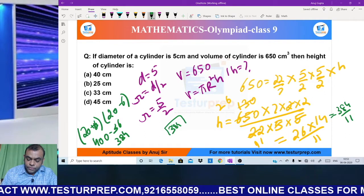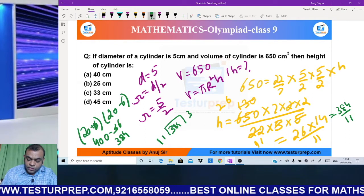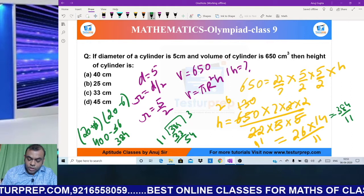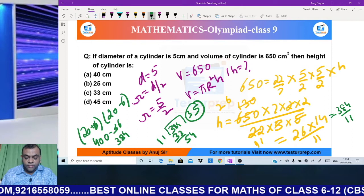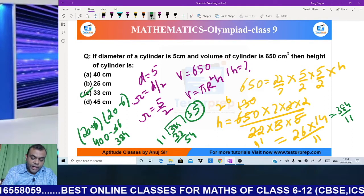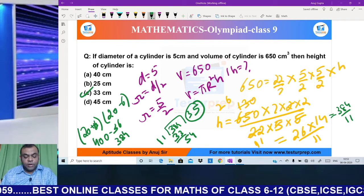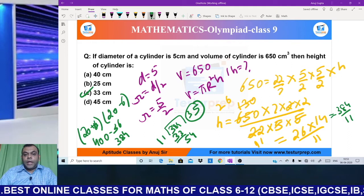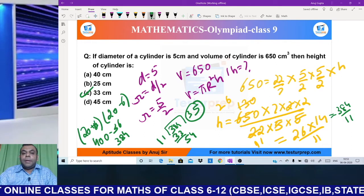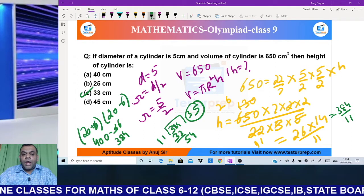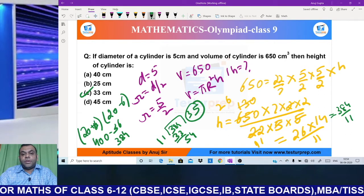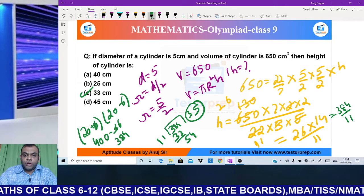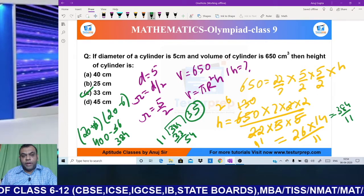So the answer is 384 by 11. If we solve 384 ÷ 11, approximately the answer is coming near to 35. The nearest option is 33, so I will go with 33. Sometimes students, there's a chance you may not get the exact answer and you have to mark the nearest option. I hope this question is clear from the topic of mensuration.